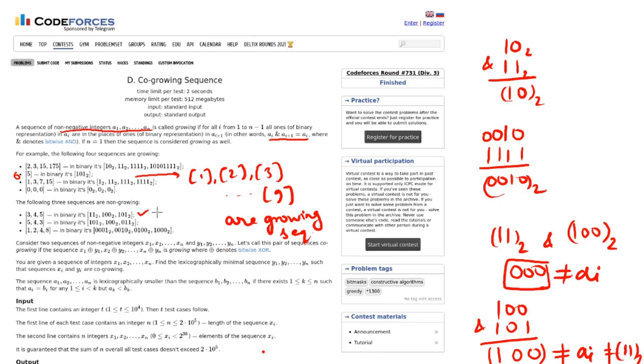Now, we have found out growing and non-growing sequence examples. Now let's look into what the problem really wants. Consider two sequences of non-negative integers x1 to xn and y1 to yn. Let's call this pair of sequences co-growing.